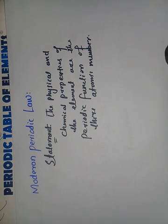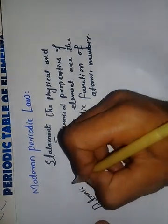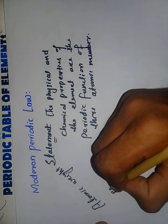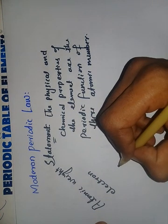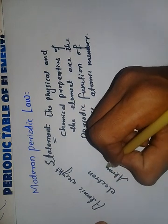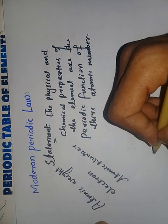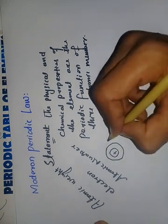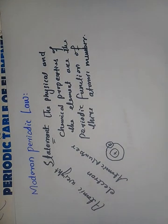Scientists like Newlands and Mendeleev said that chemical properties are controlled by atomic weight. However, in the modern view, chemical properties are controlled by electrons. The atomic number is defined as the number of electrons or protons of an element. Chemical properties in a reaction are totally determined by electron configuration, which is why the modern periodic table is based on atomic number.